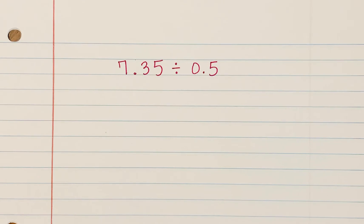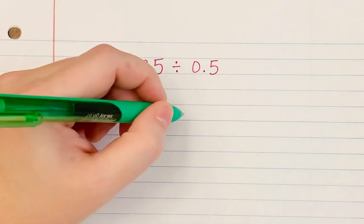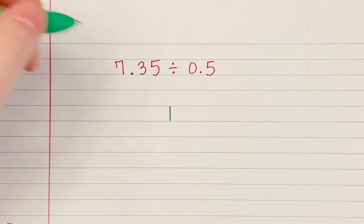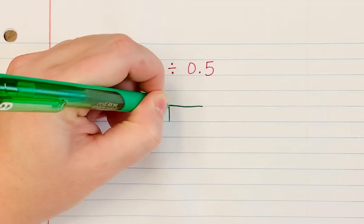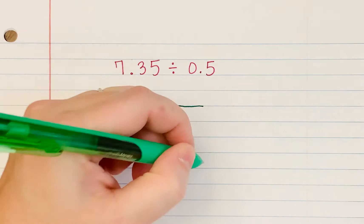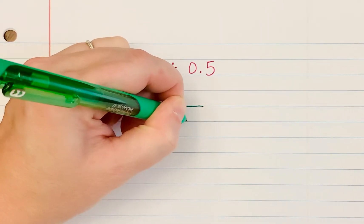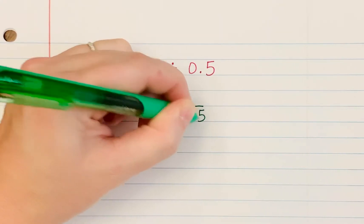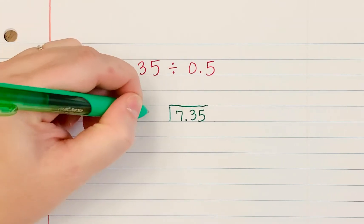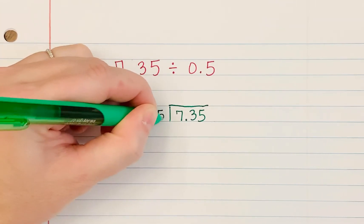The first thing we put yesterday was that the number that is first goes in the little house division symbol. So 7.35 is first, it goes inside. And then 0.5 is second, it goes outside.